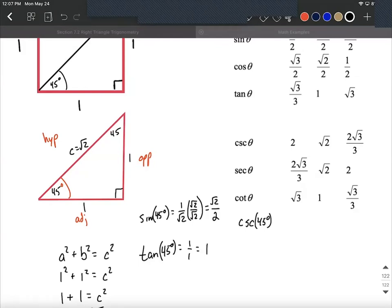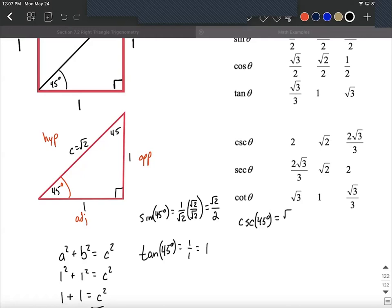So I'm going to use the version where we had one over the square root of two and I'm going to invert that to square root of two over one which works out to be the square root of two. That's where the square root of two comes from for cosecant.